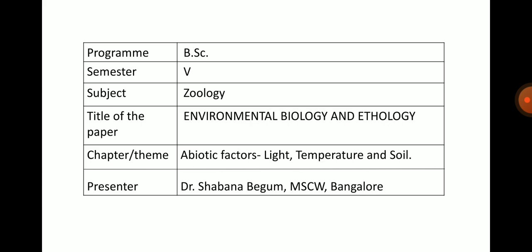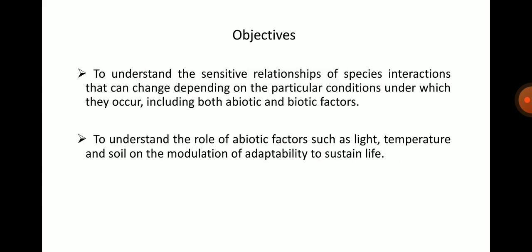In my previous class, I discussed about the concept of ecological niche and its types. The main objectives of this topic are to understand the sensitive relationships of species interactions that can change depending on particular conditions, including both abiotic and biotic factors, and to understand the role of abiotic factors such as light, temperature and soil on the modulation of adaptability to sustain life.